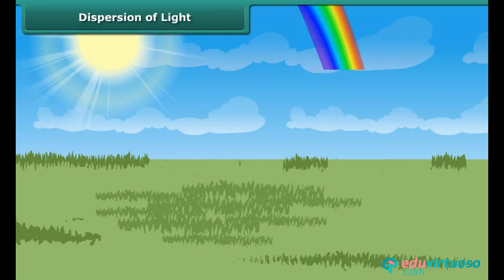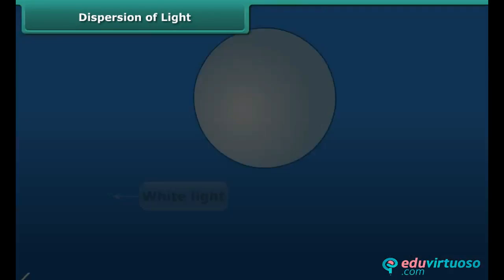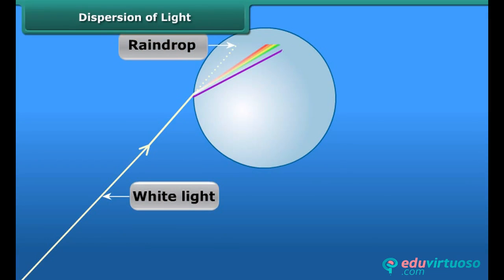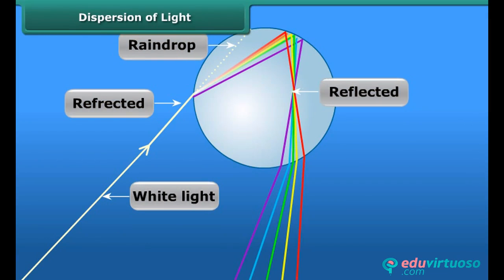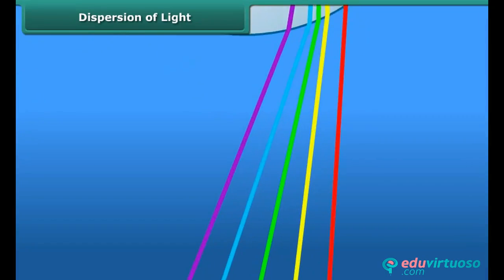Coming back to the rainbow, we can now say that the dispersion of white light passing through the water droplets formed the rainbow. The colors can be seen in the following order.